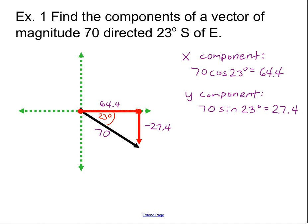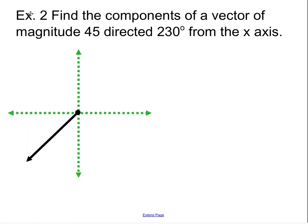Move on to example two. We want to find the components of a vector that has a magnitude 45 directed 230 degrees from the x axis. Now this is a different way of describing direction. It's not using north, south, east, or west. This idea is that you start, you create your vector, you start over here at the x axis, and you go 230 degrees from the x axis. We move counterclockwise. We always move and measure angles counterclockwise. So I'm moving, and this is 90 degrees, 180 degrees.